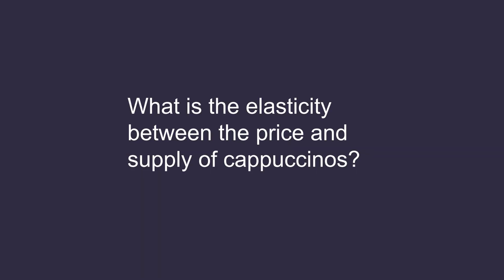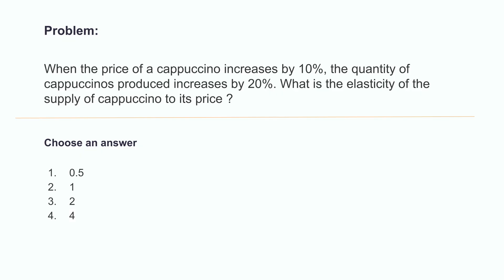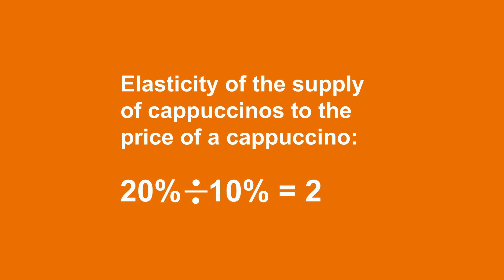Time for a quick exercise. What is the elasticity between the price and supply of cappuccinos? When the price of cappuccinos increases by 10%, the quantity of cappuccinos produced increases by 20%. What is the elasticity of the supply of cappuccinos to the price of cappuccinos? Is it 0, 0.5, 1, 2, or 4? The elasticity of the supply of cappuccinos to the price of a cappuccino is 20% divided by 10%, which equals 2. The correct answer is therefore 2.